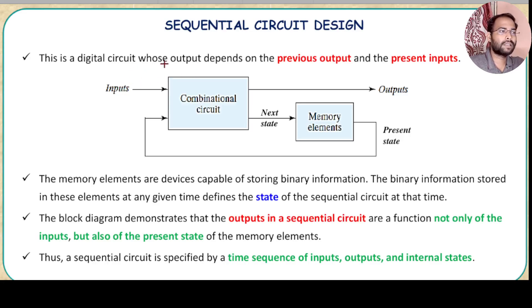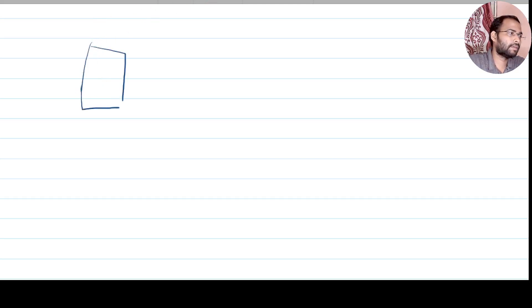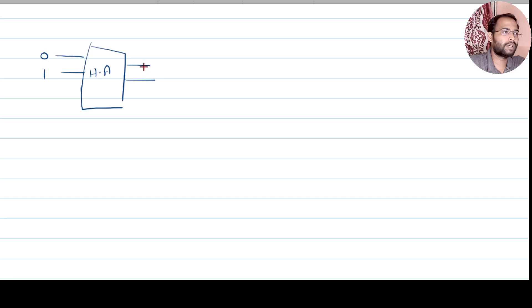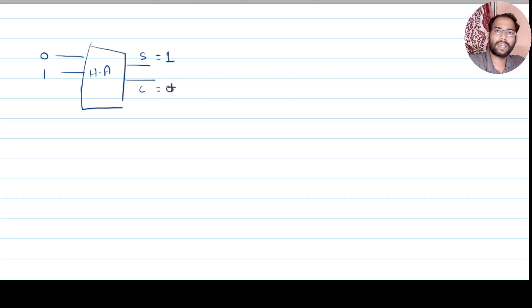The fundamental difference is that a digital circuit whose output depends on the previous output and the present inputs is what we call a sequential logic circuit. To understand this from a basic idea, let us say there is a device with two inputs and two outputs — let us consider this is a half adder. Now, if the input is 0 and 1, the sum equals 1 and the carry equals 0. No carry is generated.